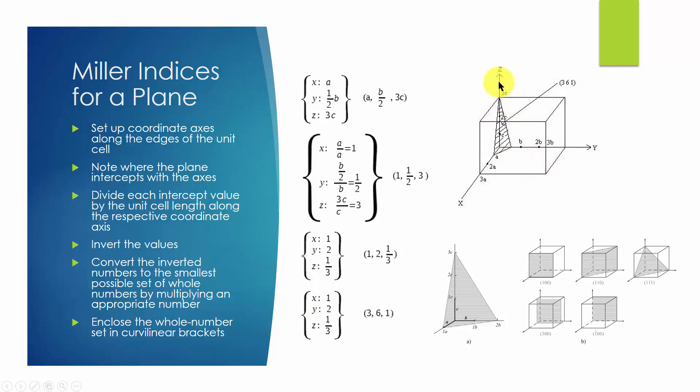We follow a very simple step-by-step procedure to get the Miller indices for a plane within a single crystal. First, we need a coordinate system, so we set up a coordinate axis along the edges of the unit cell. In this simple cubic cell, it's the x, y, z axis.